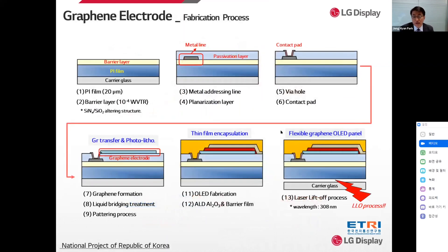This slide represents the electrode fabrication process of the demonstrated 19-inch OLED display. The process sequence is: polyimide film formation, silicon nitride/silicon dioxide passivation layer deposition, formation of metal addressing lines, contact hole formation, graphene transfer and photolithography for pixel formation, OLED device fabrication and thin-film encapsulation, and laser lift-off process for flexibility.